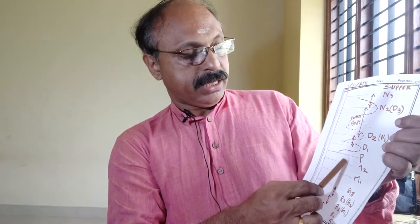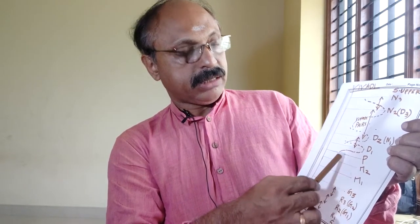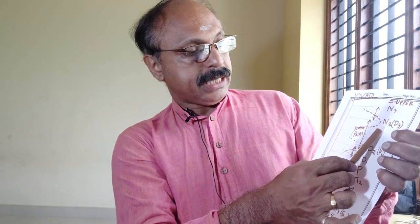M1 is Suddha Madhyam. M2 is the higher Madhyam, known as Prati Madhyam. P is Panjama, which is almost at the mid point. Then D1 is Suddha Daivadam. D2 is Chatushruti Daivadam, which shares another tonal position with N1, the lower knee — Suddha Nishadam. Next is D3, which is also Chatushruti Daivadam.